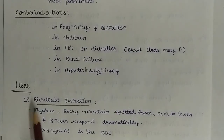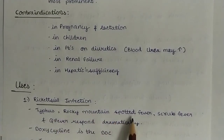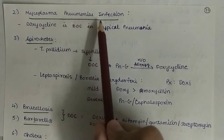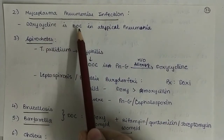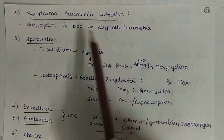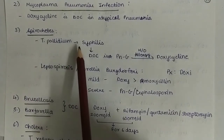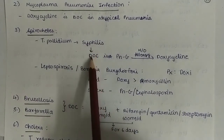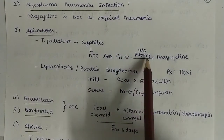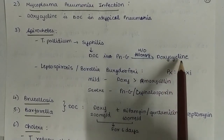Next, uses. First, rickettsial infection: in typhus fever, Rocky Mountain spotted fever, scrub fever, and Q fever, doxycycline responds dramatically. Doxycycline is the drug of choice in mycoplasma pneumonia infection — specifically atypical pneumonia caused by Mycoplasma pneumoniae. Third, spirochetes: Treponema pallidum causes syphilis and the drug of choice is penicillin G, but if the patient has a history of penicillin allergy, then doxycycline is given.